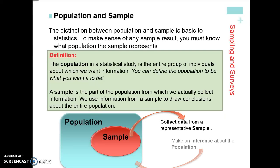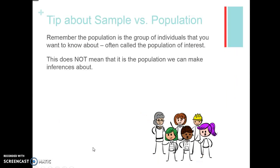So basically, we define our population — say, all students in Fairfax County — take a sample, collect the data on whether GPA is better or worse after the later start time, and then make an inference about the population. The population is the group of individuals we want to know about, often called the population of interest. However, just because we have a population of interest doesn't necessarily mean it's a population we can make inferences about.